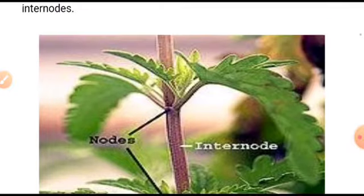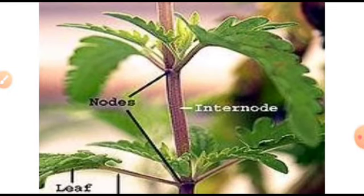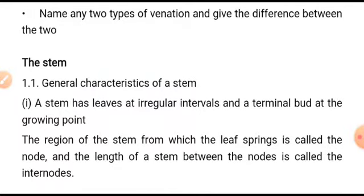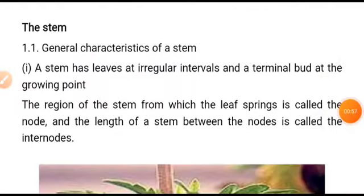We are going to discuss about the stem and what comprises the stem, and the importance of stem in biology at level one. As usual, we are talking about the structure of the flowering plant, discussing different parts of the flowering plant. We started from roots and leaves; now we are going to discuss about the stem. So let us go ahead — the general characteristics of stem.